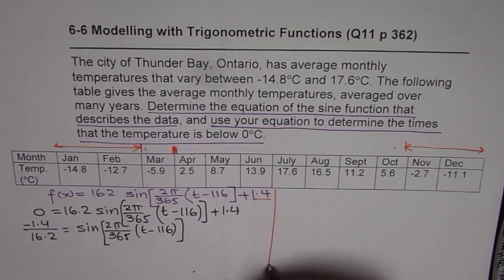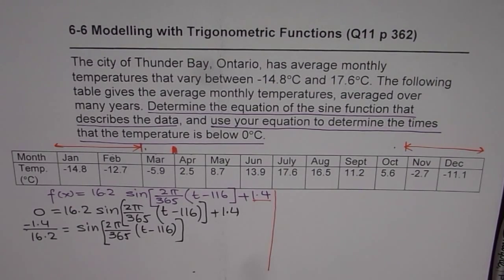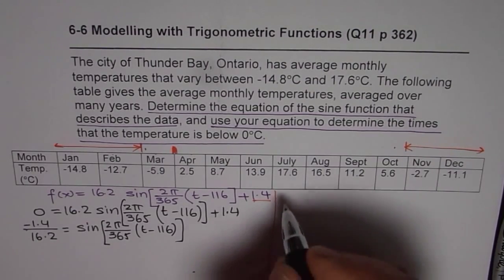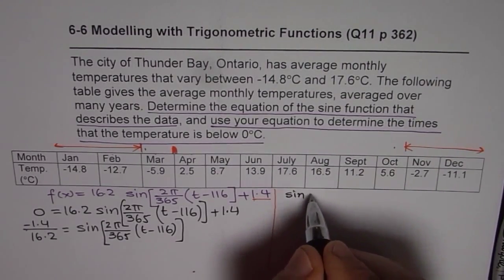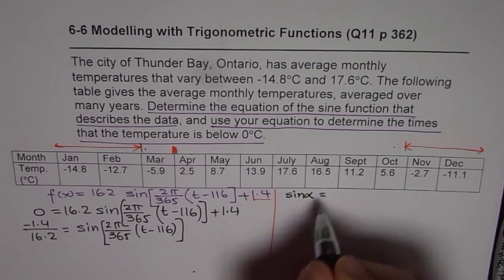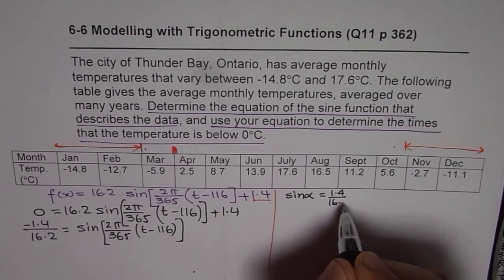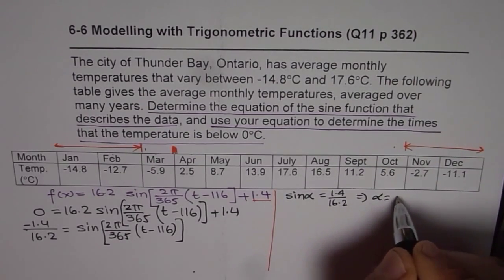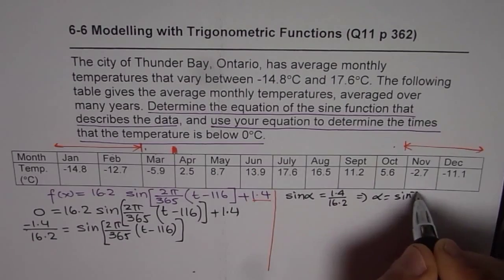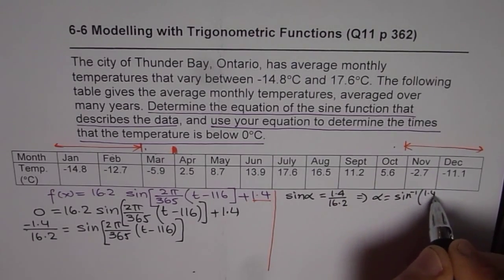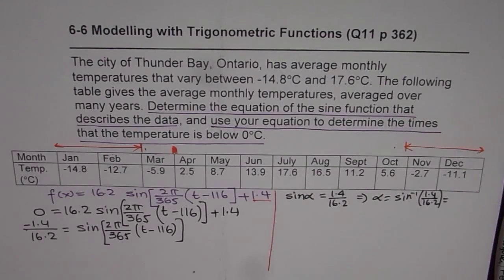So let's find the acute reference angle. So let me show you the strategy here. So what we will do here actually is, they will write this as sine of alpha, the acute angle, which will be equals to 1.4 over 16.2. So that means alpha is equals to sine inverse of 1.4 over 16.2. So let's find this angle alpha now.